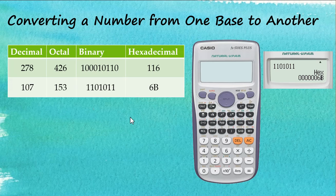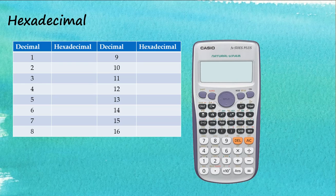Take note that for hexadecimal, other than the digits we use normally, we also use capital letters in our numbers. Let's see what numbers and letters are used in the hexadecimal system — starting from the decimal numbers we know.